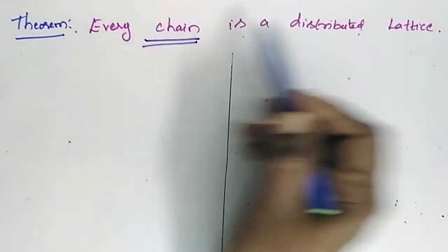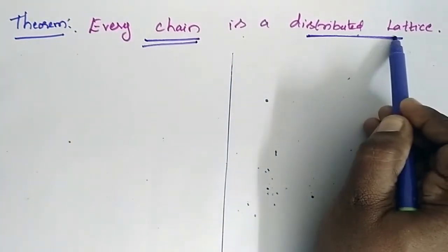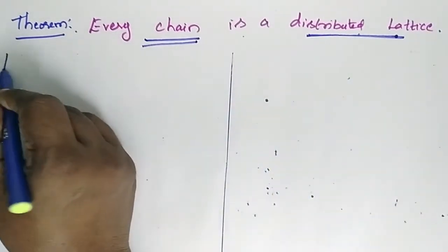Theorem: Every chain is a distributed lattice. Now we will go for the proof.